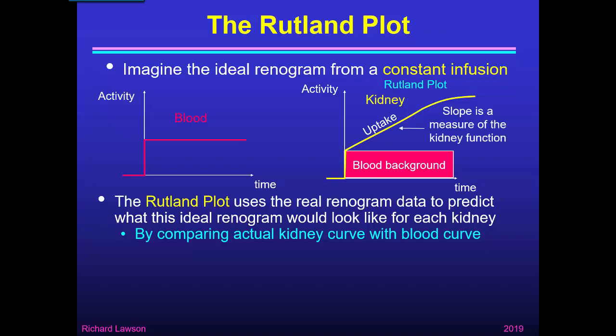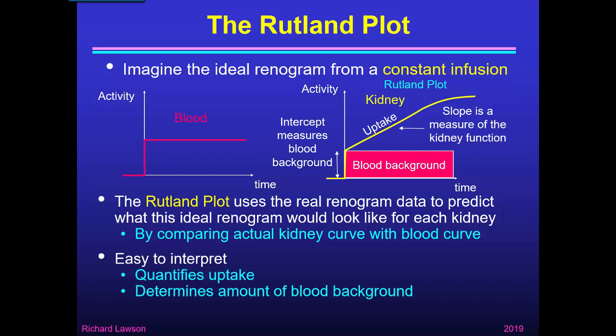The slope of the initial part of the renogram in the Rutland plot is a measure of kidney function, and the intercept where it starts measures how much blood background is present in that particular kidney. So the Rutland plot is easy to interpret: it quantifies uptake by the slope of the graph and determines the amount of blood background from the intercept.